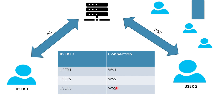At this point we have achieved one-to-one communication: user 1 sends a message to the chat server, the server checks the user 2 connection in the hash table, and sends the message back to user 2. This completes our first requirement of one-to-one messaging.